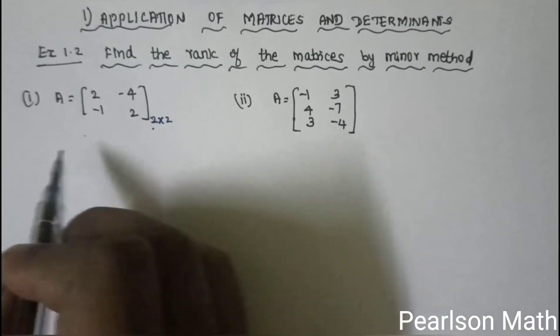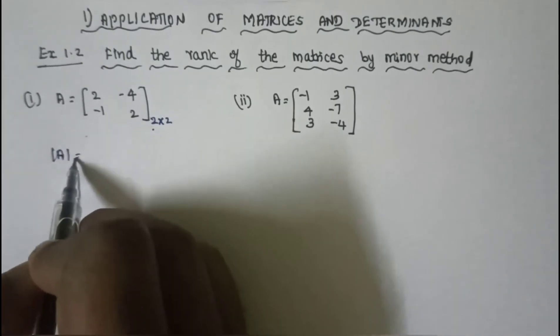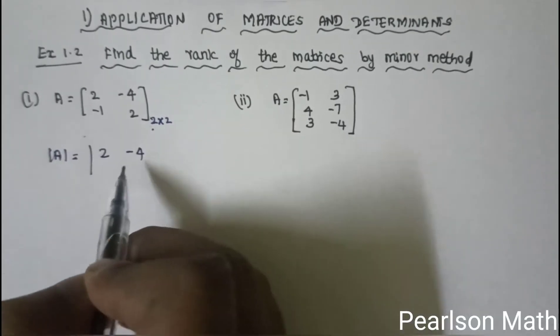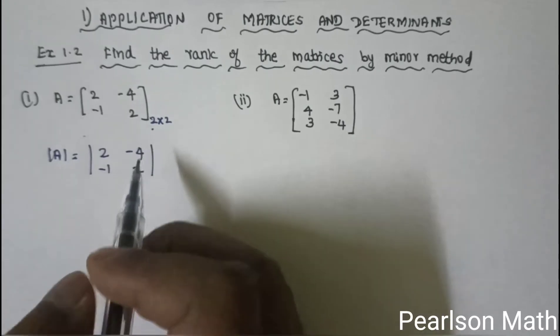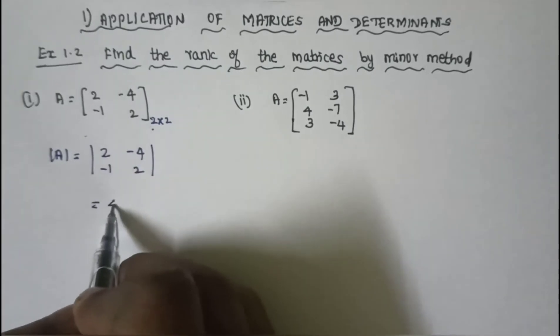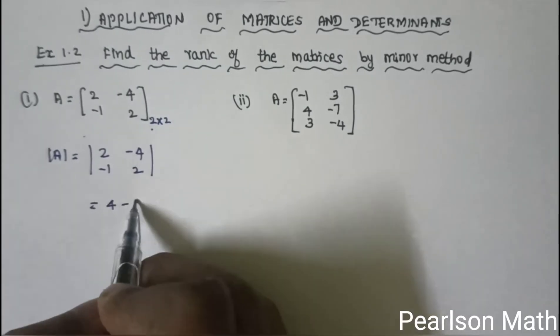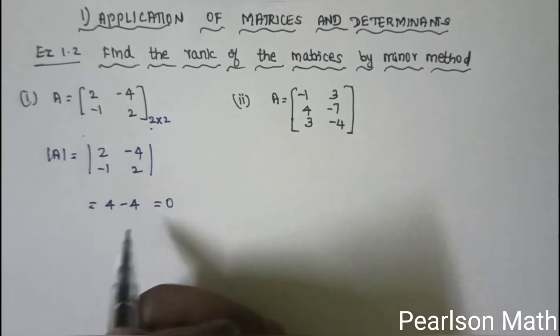Now, the determinant of A is equal to [2, -4; -1, 2] = (2×2) − (−4×−1) = 4 − 4 = 0.